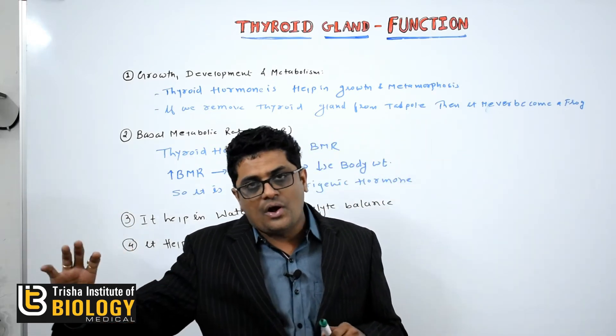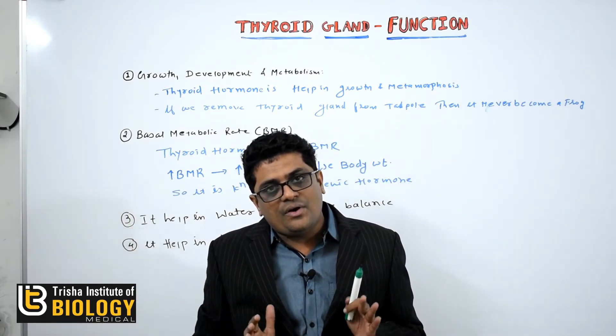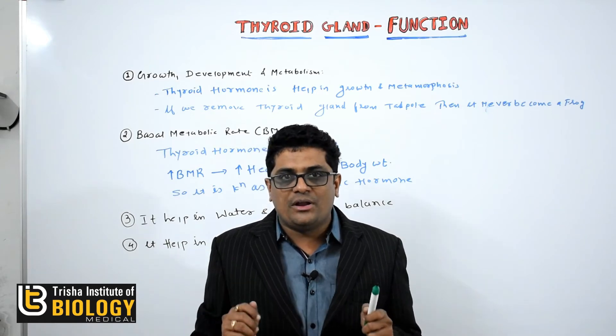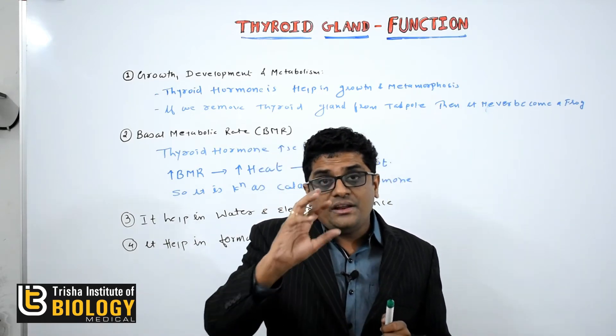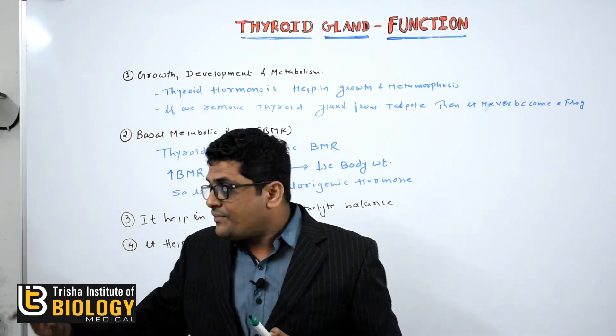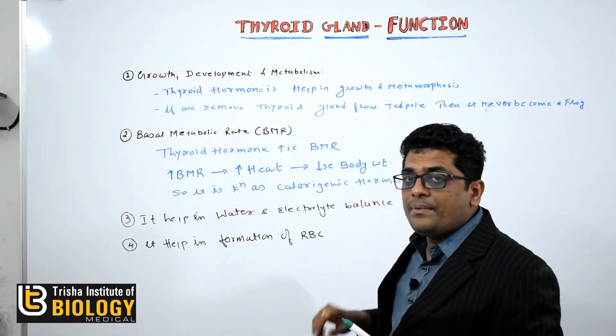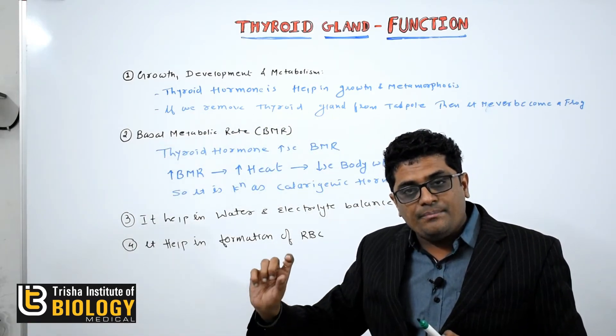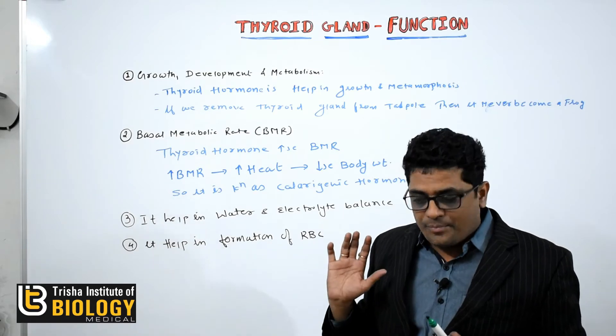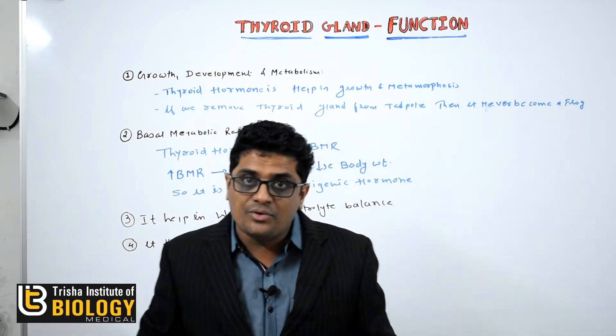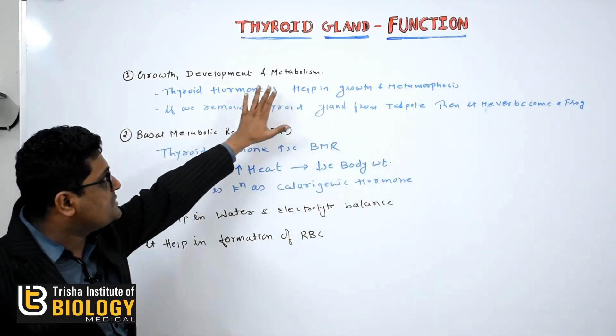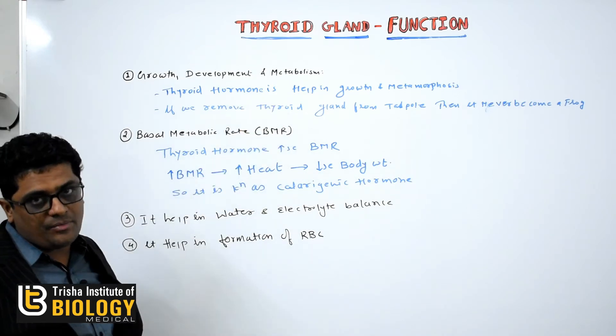we all know that in frog, the larvae form of the frog is known as the tadpole. Now if we remove the thyroid gland from the tadpole, then what happens? The tadpole never becomes a frog. The thyroid gland is responsible for the normal development and metabolism.